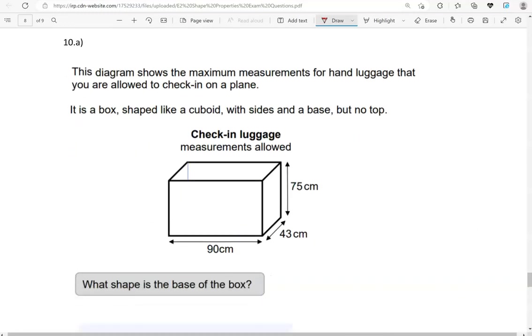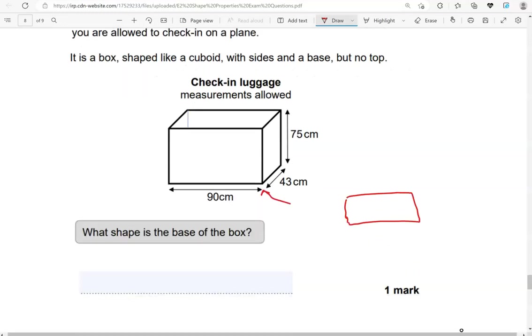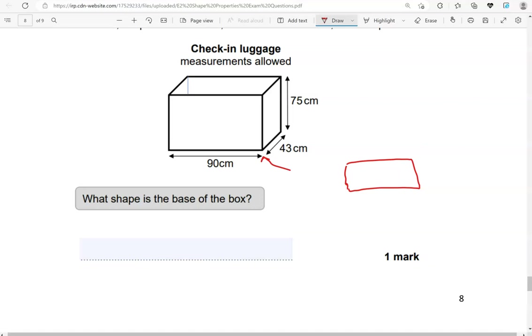This diagram shows the maximum measurements for hand luggage that you're allowed to check in on a plane. It is a box shaped like a cuboid with the sides and the base but no top. What shape is the base of the box? The base, which is here, looks like a rectangle. So it is a rectangle with length 90 centimeters as we've got here and width 43 centimeters.